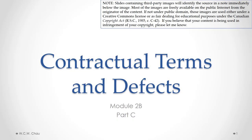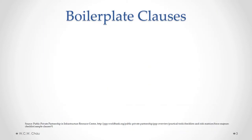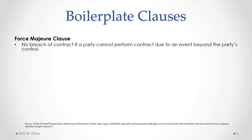Hello, it's Waylon Chow and this is Contractual Terms and Defects Module 2b Part C. In this part of the module we will look at boilerplate clauses. There are many different clauses that are commonly used over and over again in many different types of contracts. Lawyers refer to those clauses as boilerplate clauses. Standard form contracts often include a number of different boilerplate clauses, including exclusion clauses which we've already looked at, and also a number of other different ones.